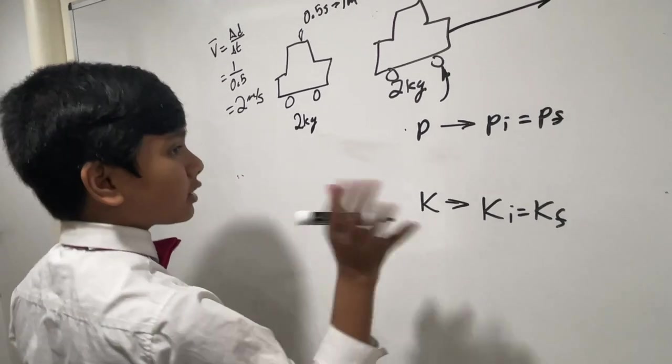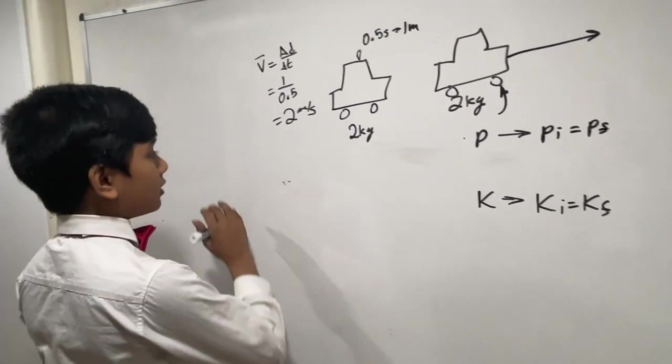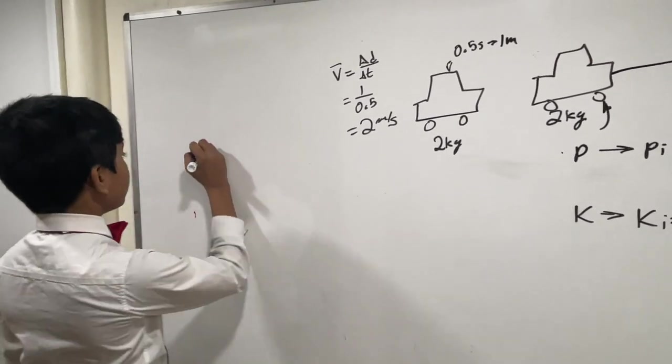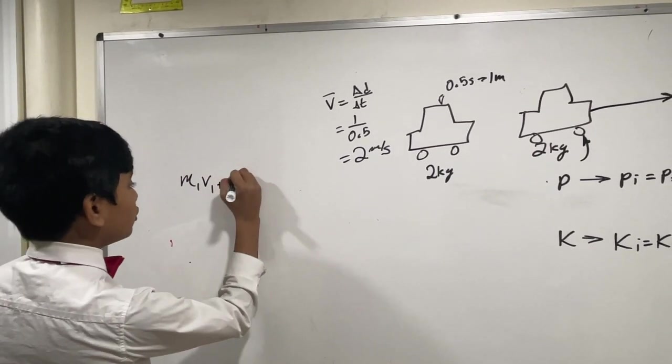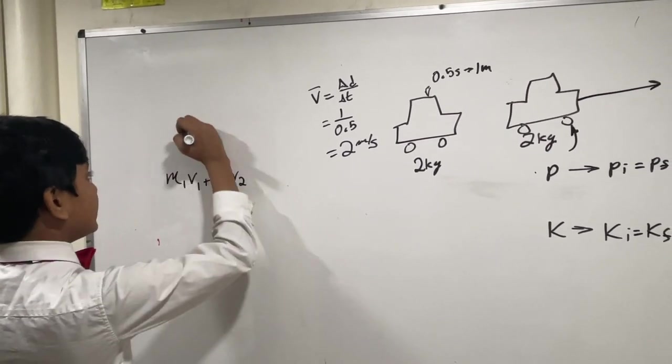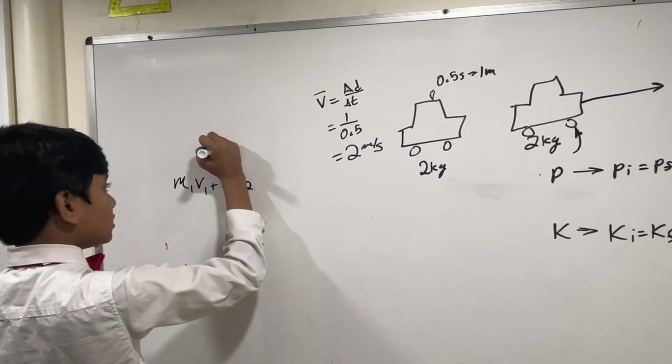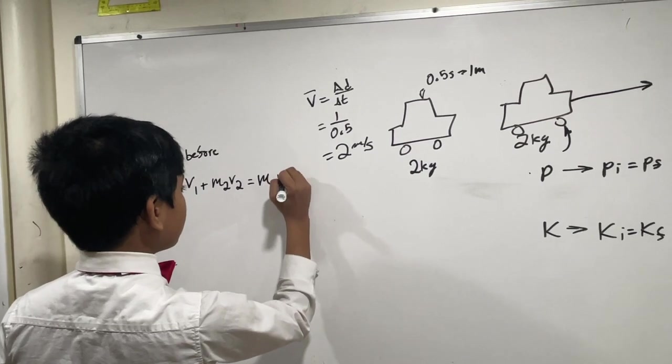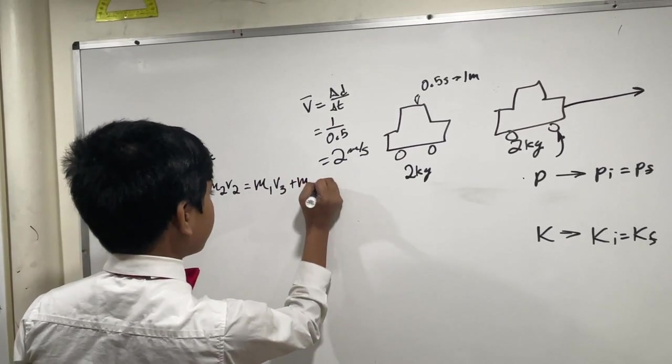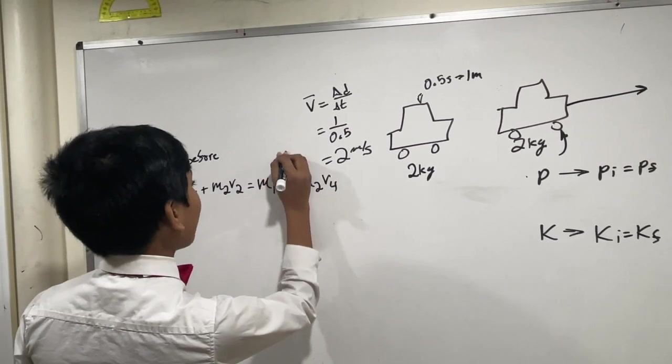So, first, let's write down the conservation of momentum equation. So, we have M1 V1 plus M2 V2, and this is before the collision, is equal to M1 V3 plus M2 V4. We know this is after the collision.